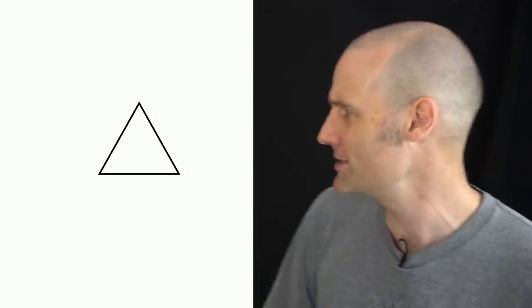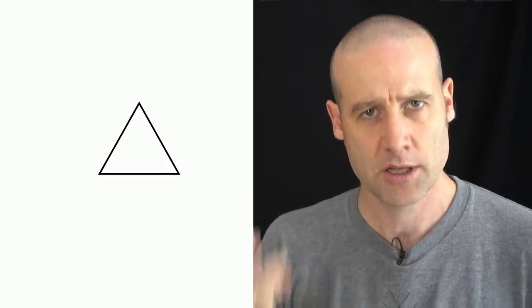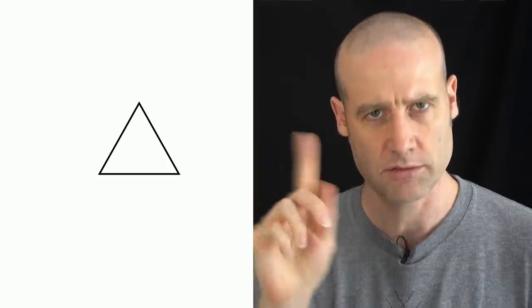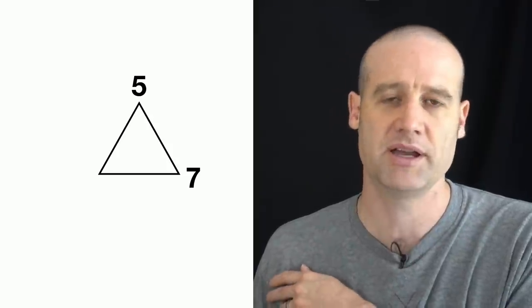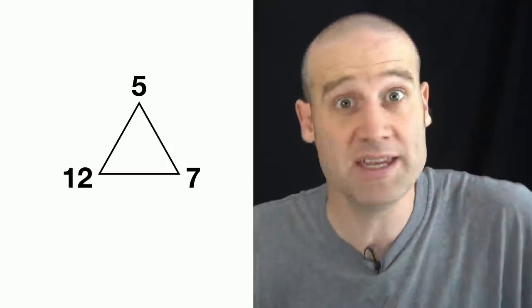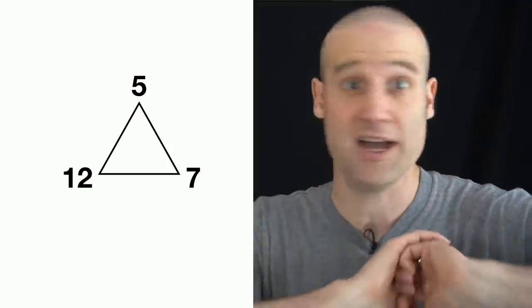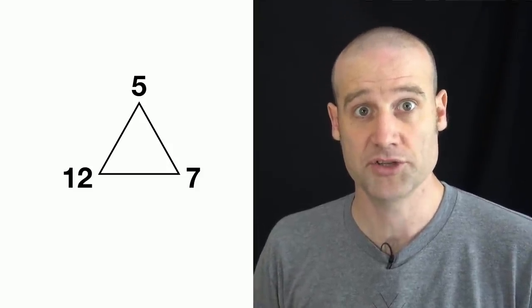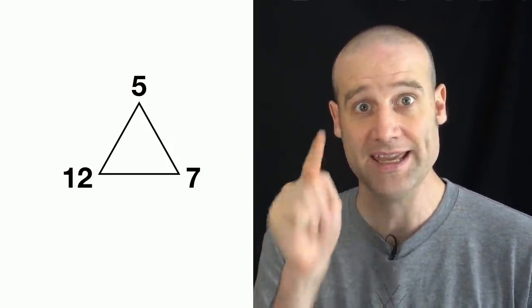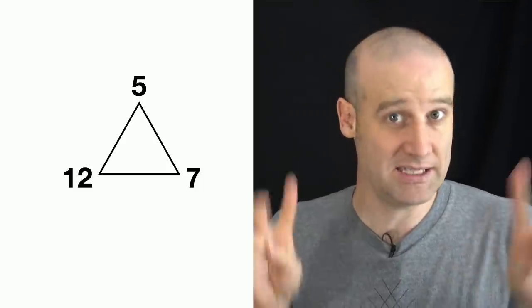So this triangle has three points — no surprises so far. Around the triangle we can put some numbers, and you can put any numbers you want on each of the points. I'm going to put in a 5, followed by a 7, and then a 12. There's no meaning there — I genuinely just picked some random numbers and put them on the points of this triangle. We're now going to turn it into a takeaway triangle.